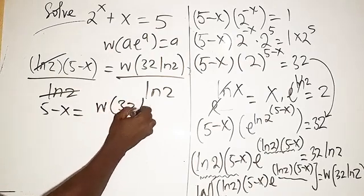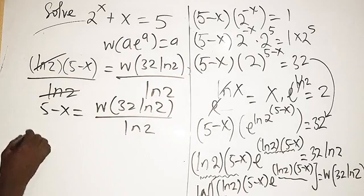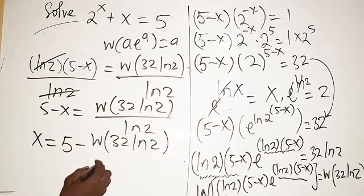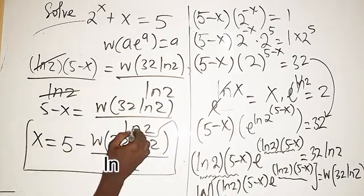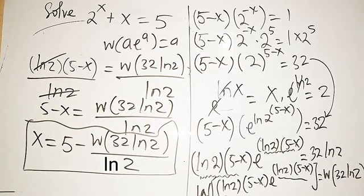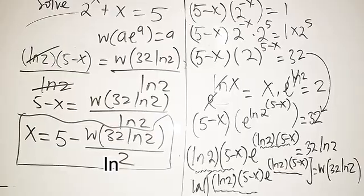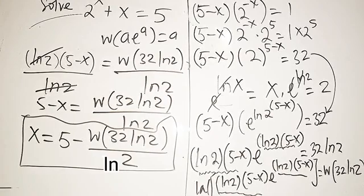Making x the subject, we get: x = 5 minus W(32·ln2) / ln2. This is the solution to the problem. If you find the class very interesting, do not hesitate to share this with your colleagues. Subscribe and hit the bell icon so that you'll be notified whenever we upload new content. Thank you for watching — bye!